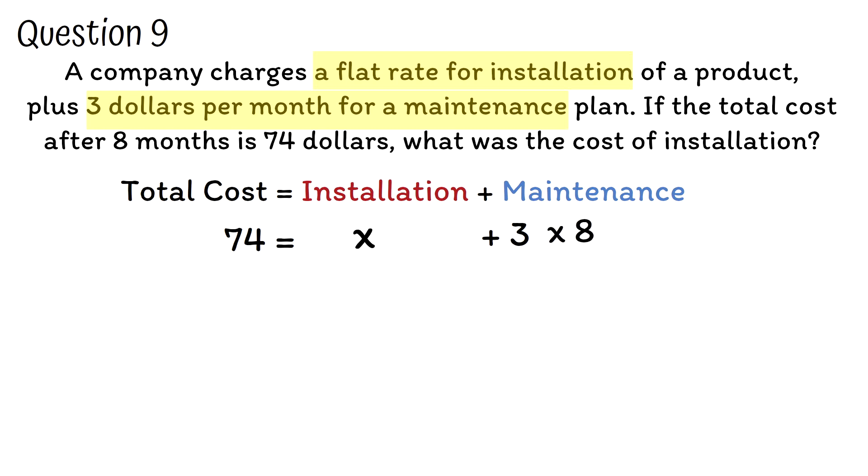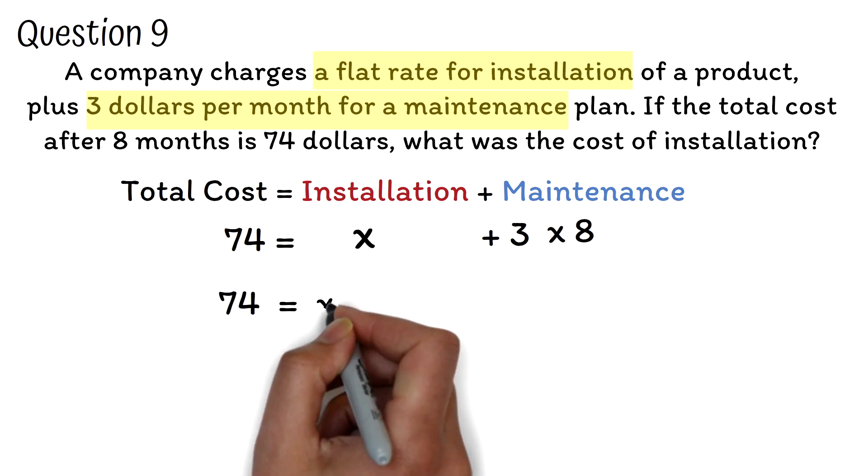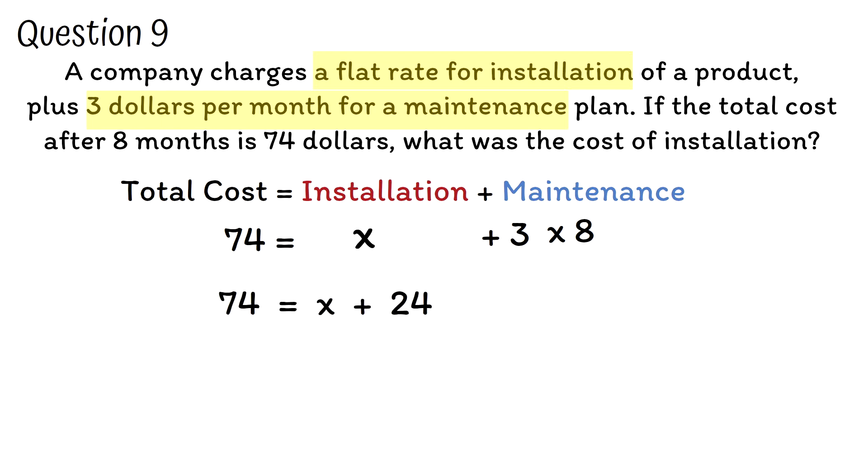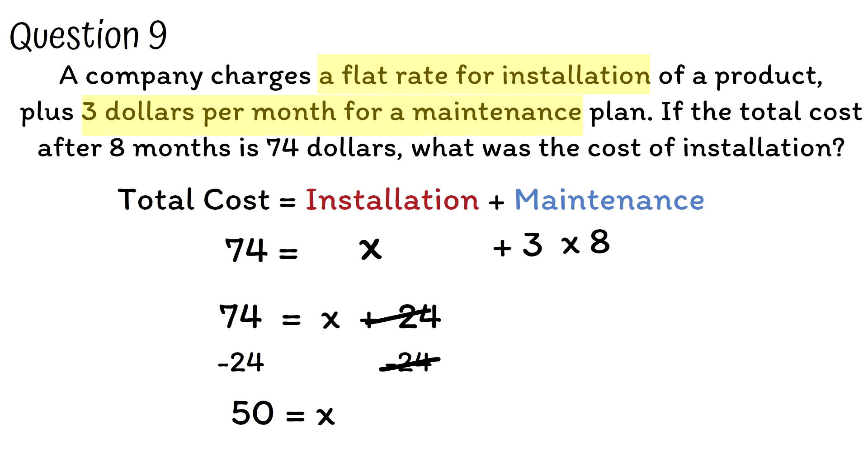We multiply this to get 24. Now we have 74 = x + 24. We solve for x, one step equation. Subtract 24 from both sides. The 24 will cancel out. 74 minus 24 is 50. So the cost for installation is $50.